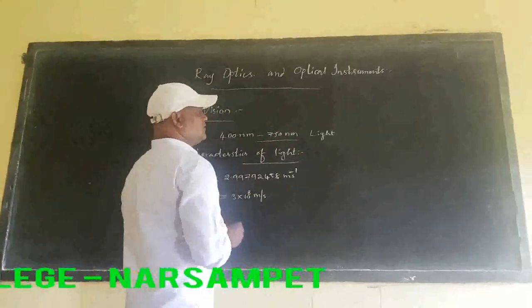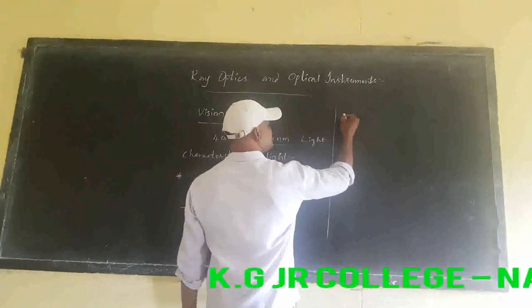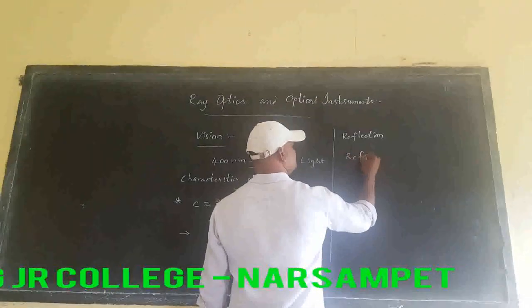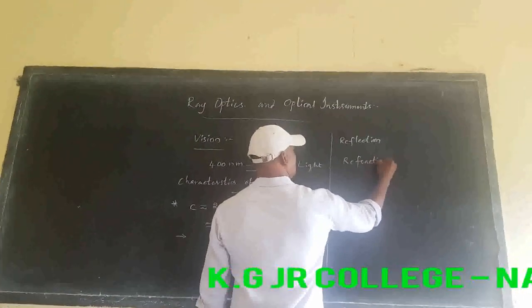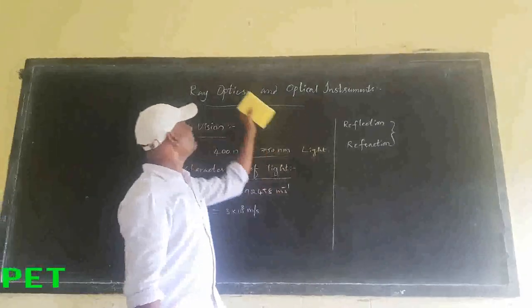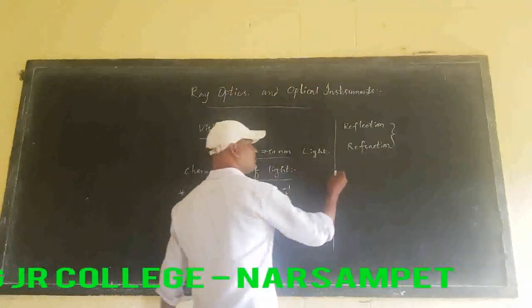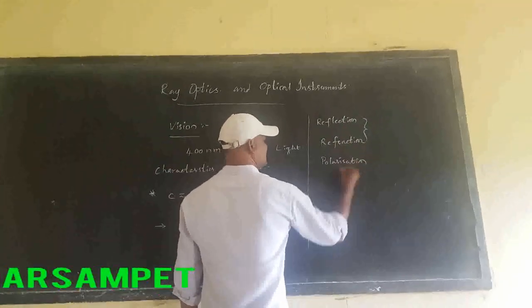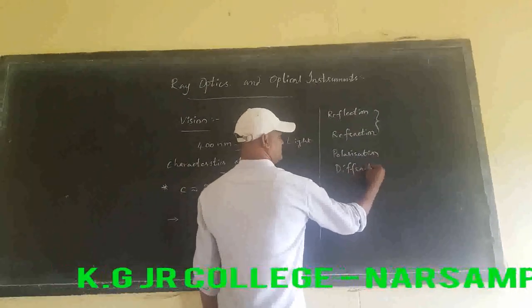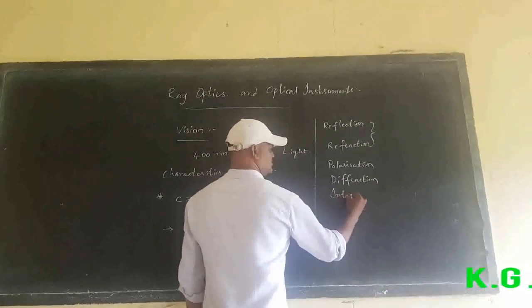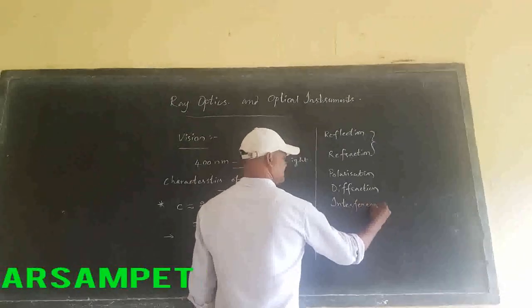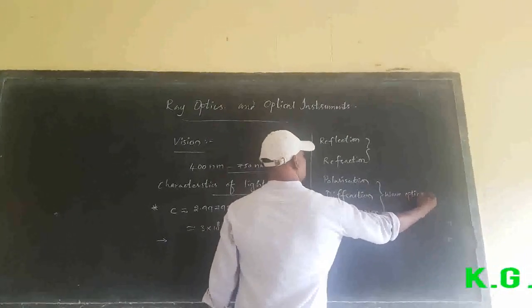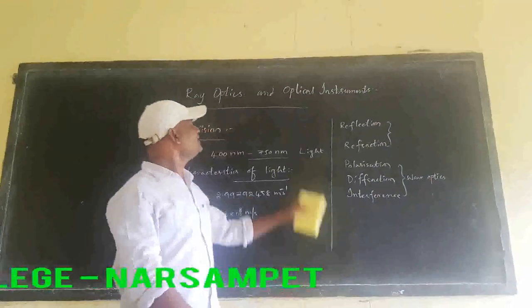The properties of light include: first, reflection; second, refraction. These two properties are discussed in ray optics. The other three properties — polarization, diffraction, and interference — are discussed in wave optics.